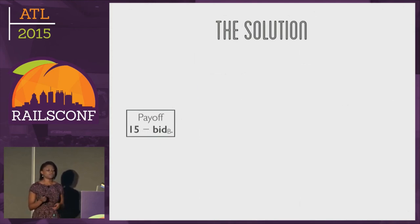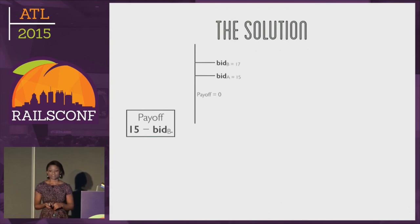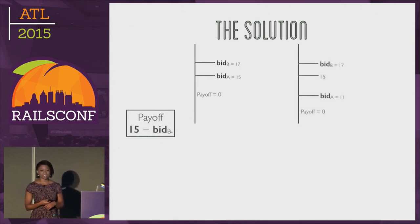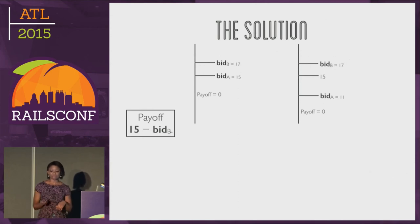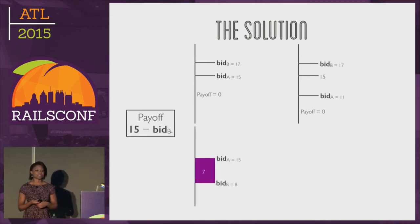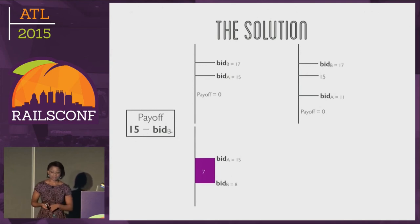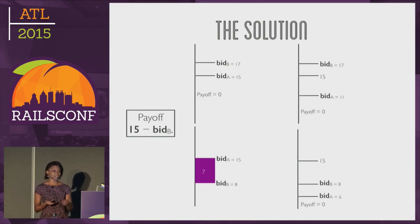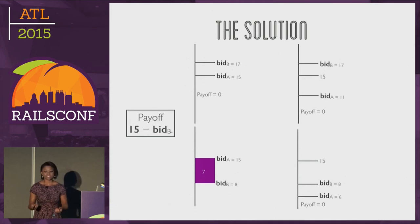What about bidding lower? If computer A is already losing the auction, bidding any lower makes no difference — the payoff remains zero. And in the case where computer A is winning at a bid of 15 and computer B bids 8, any bid lower than 15 will make no difference to the payoff, unless computer A reduces its bid below computer B's bid and loses. So once again, the incentive is to stick with a bid of 15.